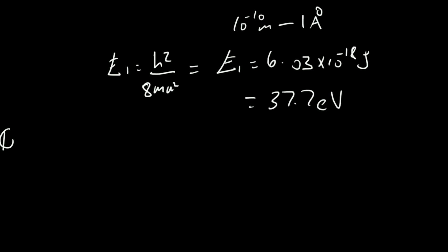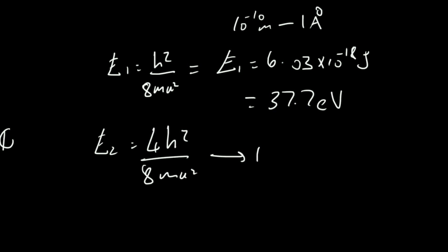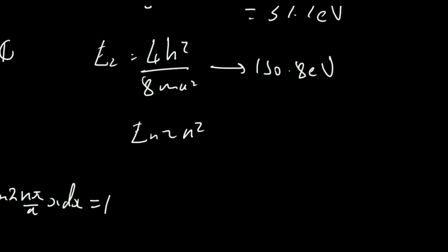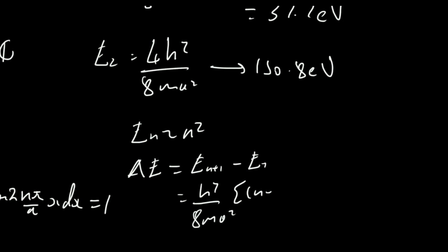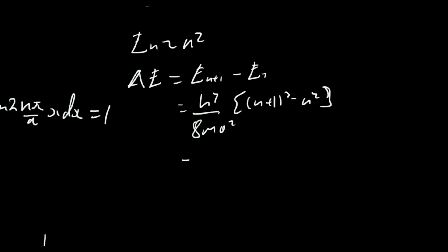The second energy E2 equals 4h squared over 8ma squared turns out to be about 150.8 electron volts. The energies aren't evenly spaced — they scale with n squared. The energy difference between the (n+1)th and nth state is delta E equals h squared over 8ma squared times (2n plus 1), which increases with n.